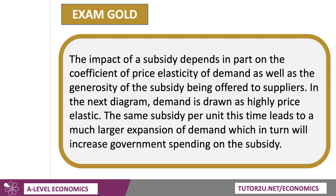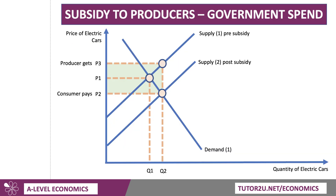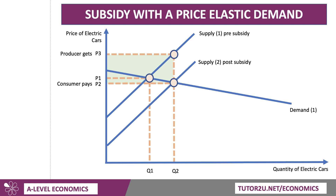The effect of a subsidy depends, in part, on the coefficient of price elasticity of demand, as well as the generosity of the subsidy offered to suppliers. I'm going to show another diagram where demand is drawn as more price elastic with the same subsidy per unit — this time it leads to a larger expansion of demand. The green area shows the subsidy payment in the original diagram. With a more price-elastic demand curve, for the same subsidy we get a bigger increase in demand: Q2 is larger than before. The producer still gets the subsidy, the consumer pays P2, and the green area is bigger than before because output has gone up. So the government is committed to the subsidy per unit and will therefore have to pay more in total.